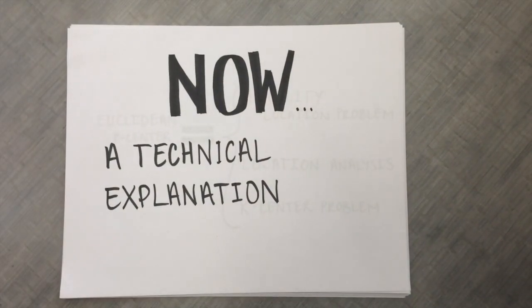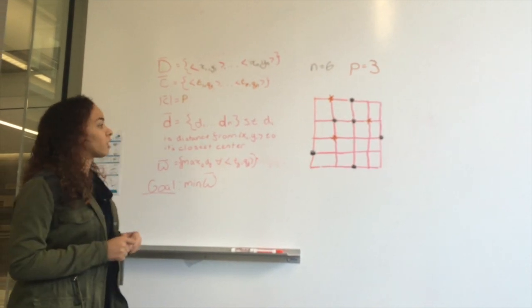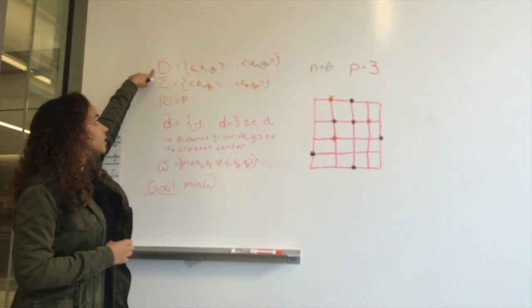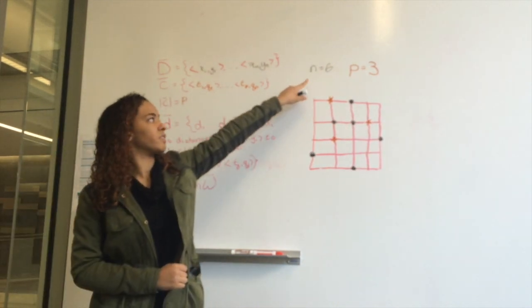Now, a technical explanation. We'll start with our set D. This set is going to contain all of our demand points, in this case the given number n.